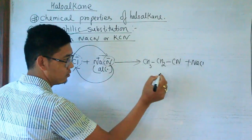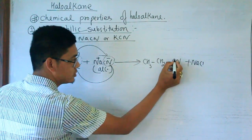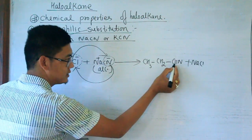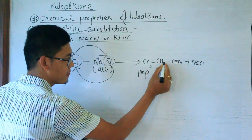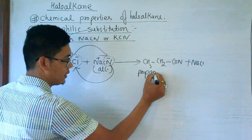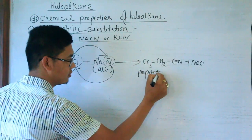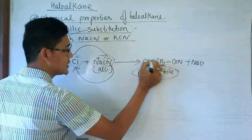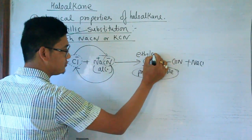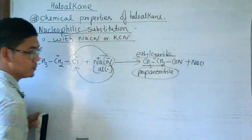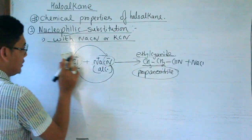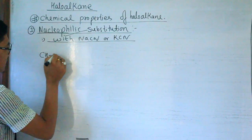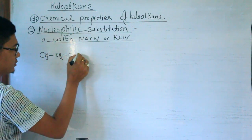The product CH₃CH₂CN has a carbon–nitrogen triple bond. CN is called cyanide. The IUPAC name is propanenitrile; the common name is ethyl cyanide. So the product of this nucleophilic substitution of ethyl chloride with NaCN is ethyl cyanide or propanenitrile.